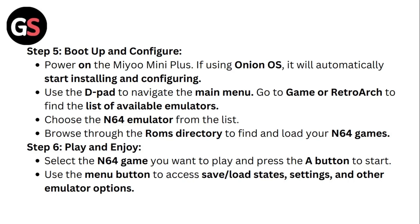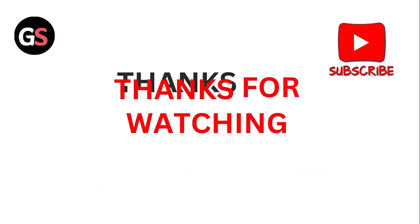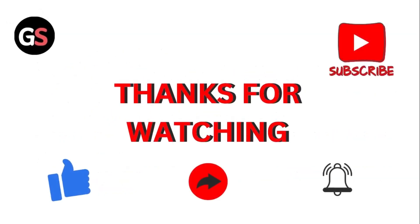Step 6: Play and enjoy. Browse through the Roms directory to find and load your N64 games. Select the game you want to play and press the A button to start. Use the menu button to access save or load states, settings, and other emulator options. Thank you for watching!